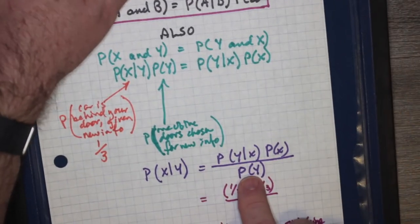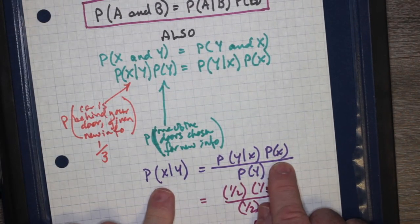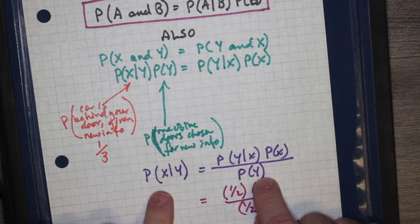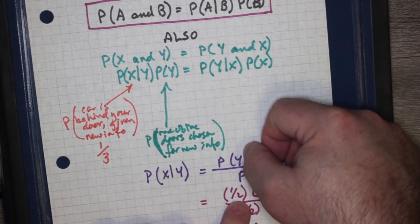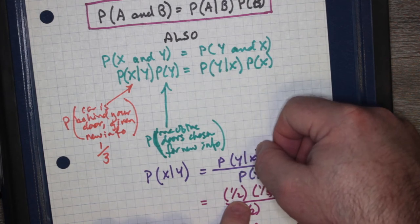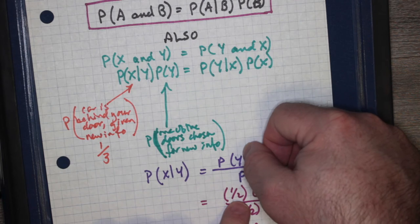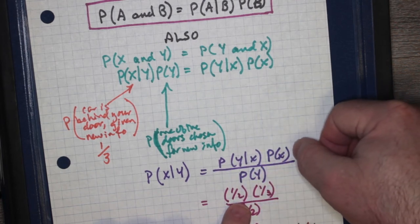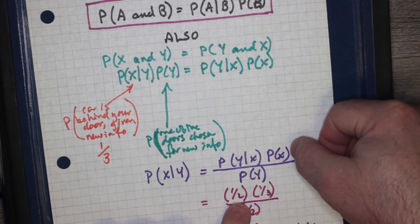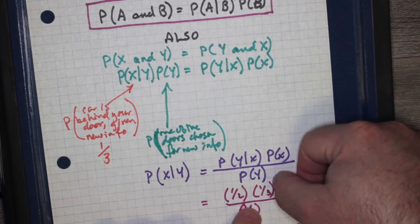P(X given Y) is equal to P(Y given X) times P(X) over P(Y). Well, P(Y given X), the probability that Monty Hall was going to choose one of the doors given that you chose the prize, is really based on the two remaining doors, so that's really one over two. The probability of you choosing the winning door occurred before you knew any of the information, so that's still one over three.